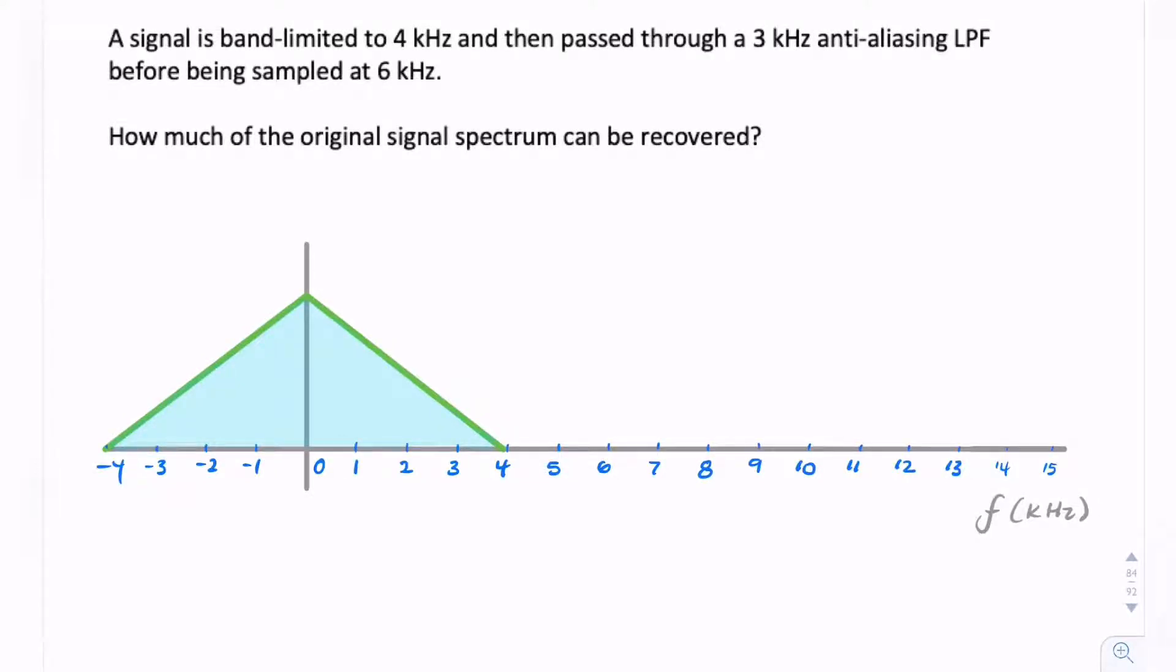Here we have a band-limited signal, so it's band-limited to 4 kHz, but then it's further band-limited by passing through a low-pass filter with a bandwidth of 3 kHz. And then we sample the output of that filter at 6 kHz.